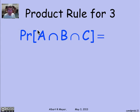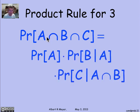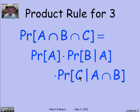If you have a tree of depth three, you need a product rule for three consecutive choices, which generalizes in a straightforward way. The probability of A and B and C is: the probability of A on the first branch, times the probability of B given A on the second branch, times the probability of C given A and B on the third branch. This product rule for three can be proved by substitution using the product rule for two, applied twice.